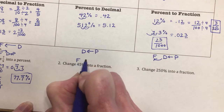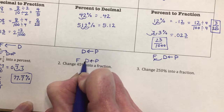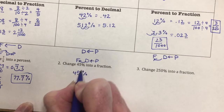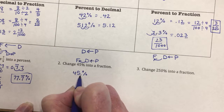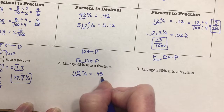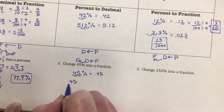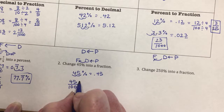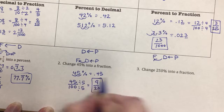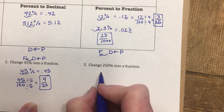To change 45% into a fraction: percent to decimal first — move two places to the left, giving 0.45. Then decimal to fraction — write it like I say it: 45 hundredths is 45 over 100. Both are divisible by 5, so simplifying gives 9/20.